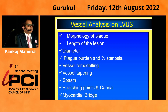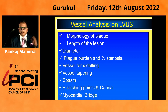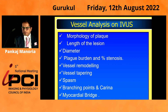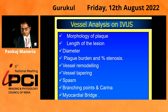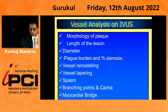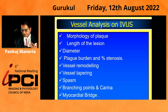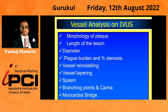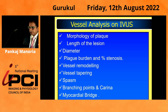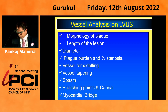My talk is based on these points: morphology of plaque — I think you have a separate lecture on that — then comes the length of the lesion, the diameter of the device to be taken, the plaque burden, the percentage stenosis, vessel remodeling, vessel tapering, spasm, branching points, carinal angle, and the myocardial bridge. These are all the points which we need to assess once we do the IVUS.